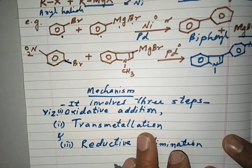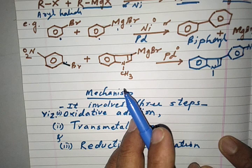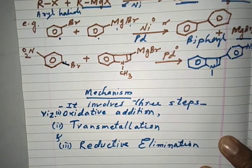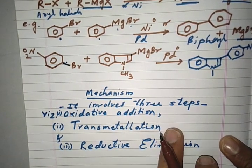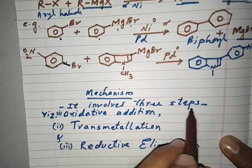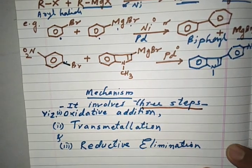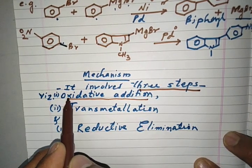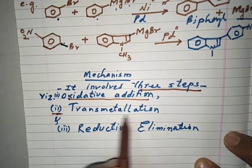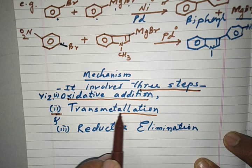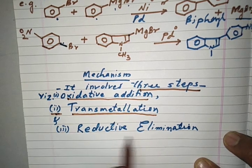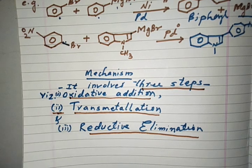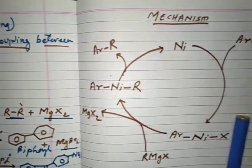Let us go through the mechanism of Kumada cross coupling. The mechanism involves three important steps. The first is oxidative addition, the second is transmetallation, and the third is reductive elimination. Let us go through this mechanism step by step.